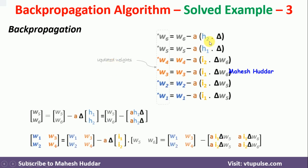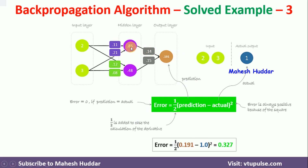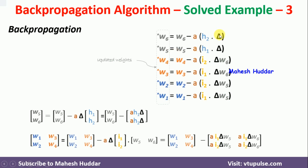The derivative term looks like this. For the output layer, the derivative term is calculated by multiplying the input with the error — that is delta. For W5, the input is H1 (0.85) and the error is delta. For W6, the input is H2 and the error is delta. The error delta is calculated as predicted output minus actual output. So delta multiplied by input gives the derivative term for the output layer weights.